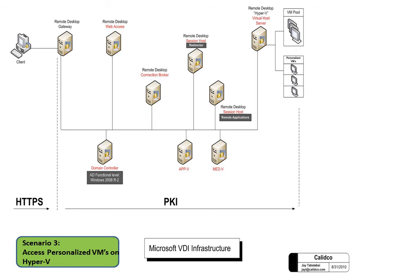The next scenario shows how a personalized VM request works. The client makes a request for a virtual machine, goes through the gateway, comes to the domain controller, goes to Connection Broker, then to Session Host which redirects the request to the virtual host server.